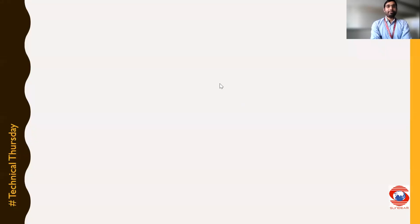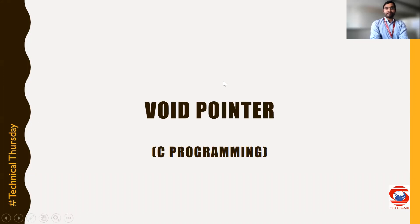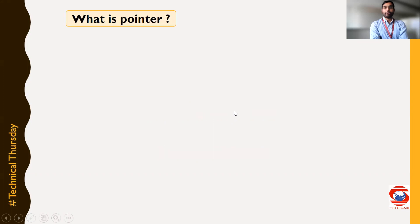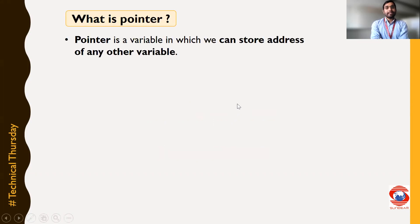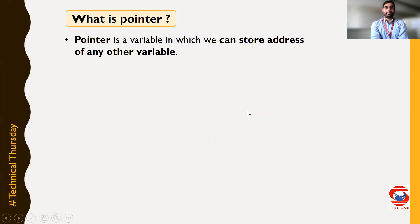Hello all. In today's video, we are going to discuss about void pointers in C programming. But before going for actual discussion, we need to understand what is a pointer. Basically, a pointer is a variable in which we can store the address of any other variable. We will understand this with some small example.